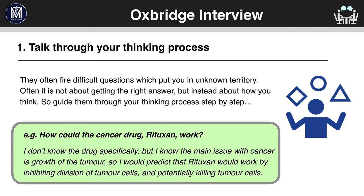Here's an example: How could the cancer drug Rituxan work? If you get a question like this, don't panic. They don't expect you to know about Rituxan at all; instead they want to see how you think. Here's a good answer: 'I don't know the drug specifically but I know the main issue with cancer is growth of the tumour. So I would predict that Rituxan would work by inhibiting division of tumour cells and potentially killing tumour cells.' This student has never heard of Rituxan and doesn't know much about cancer drugs, but he knows that cancer is caused by growth of a tumour. So he's put two and two together and made a prediction that it could work by killing tumour cells. This is a great example of how you can use the knowledge you do have, apply it, and make speculations.